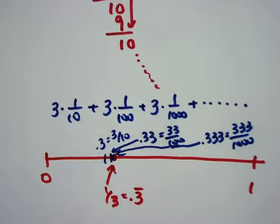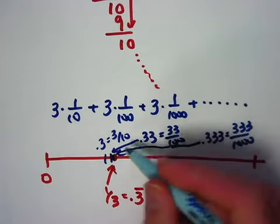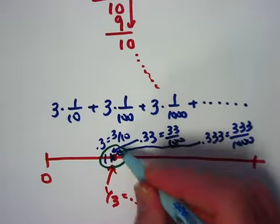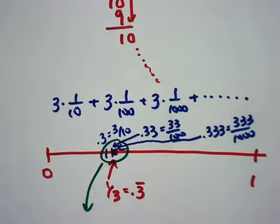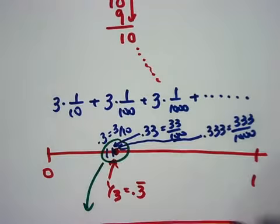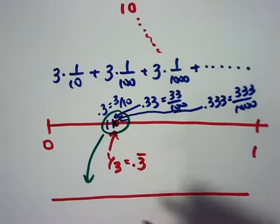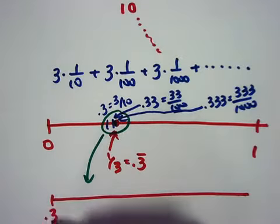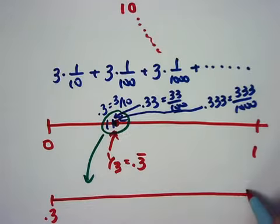In fact, I could even imagine zooming in on this picture, like you've got a microscope. Zoom in on this picture. As if you've got a microscope, what would it look like? So I've kind of expanded my picture. Maybe this is 0.3 now, and this is, well, 0.4.